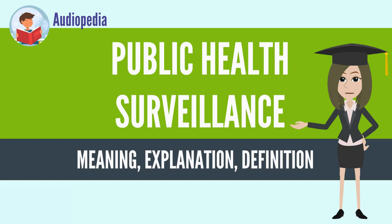Public health surveillance systems can be passive or active. A passive surveillance system consists of the regular, ongoing reporting of diseases and conditions by all health facilities in a given territory. An active surveillance system is one where health facilities are visited and healthcare providers and medical records are reviewed in order to identify a specific disease or condition. Passive surveillance systems are less time consuming and less expensive to run but risk under-reporting of some diseases. Active surveillance systems are most appropriate for epidemics or where a disease has been targeted for elimination.